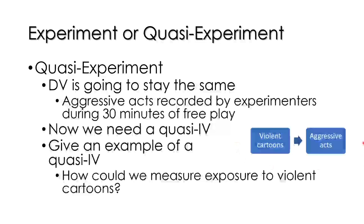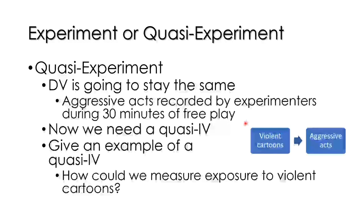So let's turn this experiment into a real quasi-experiment. The DV is going to stay the same — that's the number of aggressive acts recorded by the experimenters during 30 minutes of free play. But now we need a quasi-independent variable. The independent variable in the study we did before was a manipulated variable where some students saw a control condition of action cartoons without any violence, and the others saw action cartoons with violence. The amount of violence in the cartoons varied between the two conditions.